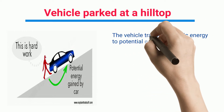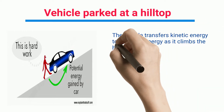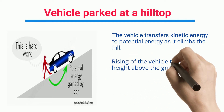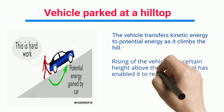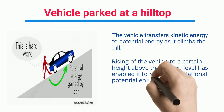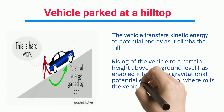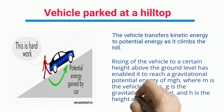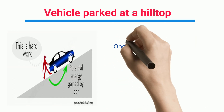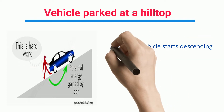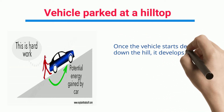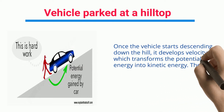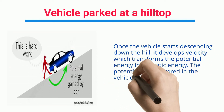A vehicle parked at a hilltop transfers kinetic energy to potential energy as it climbs the hill. Rising to a certain height above ground enables the vehicle to reach a gravitational potential energy of mgh, where m is the vehicle's mass, g is the gravitational constant, and h is the height above ground attained.